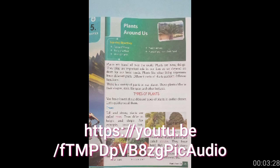Next one है creepers. Plants that grow along the ground are called creepers. जो धरती के साथ नीचे होते हैं — दूसरे पौधों की तरह ऊपर नहीं लगते हैं, fruits नीचे रहते हैं, धरती से touch होकर मिट्टी से — उसको creepers बोलते हैं. Like pumpkin, watermelon, cucumber — these are creepers. ये नीचे ही लगते हैं.